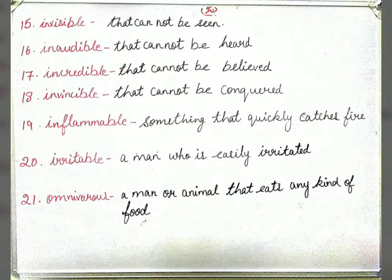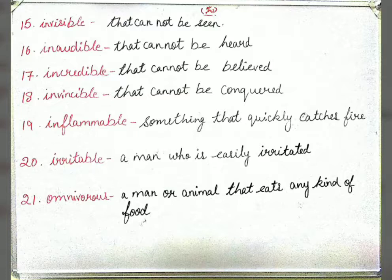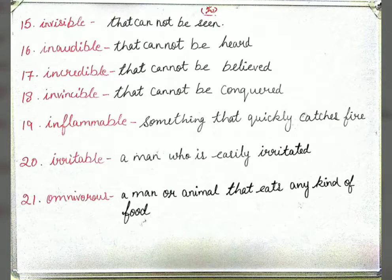The 15th is 'invisible' — that cannot be seen. Jise hum dekh nahi sakte use invisible kehte hain. For example, we cannot see wind, so we can say 'wind is invisible'. Next is 'inaudible' — that which cannot be heard. 'Incredible' — that which cannot be believed. 'Invincible' — that cannot be conquered, meaning jise hum jeet nahi sakte.